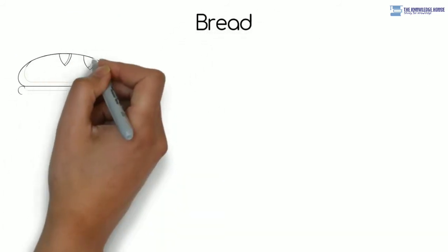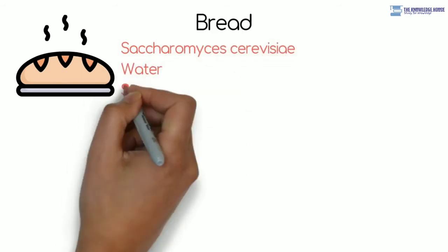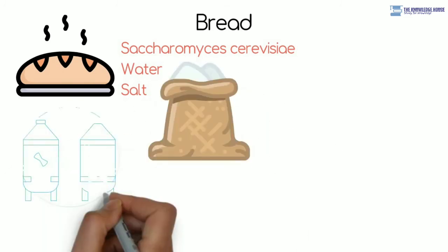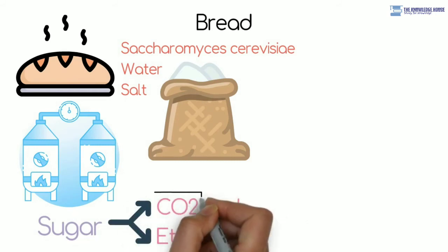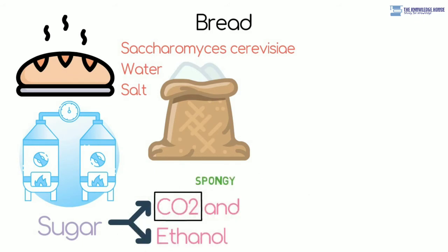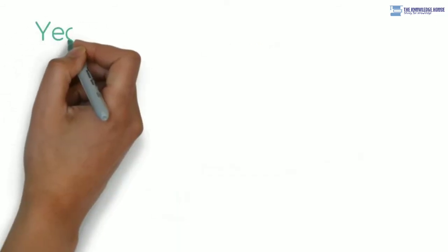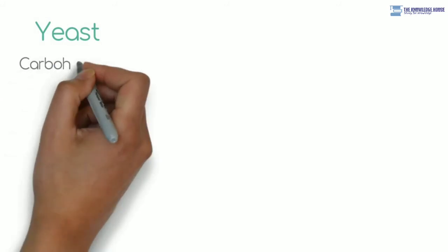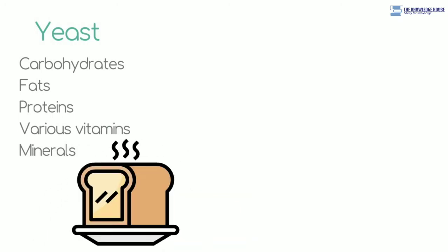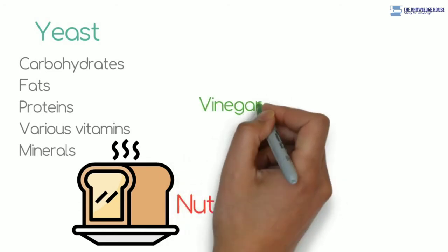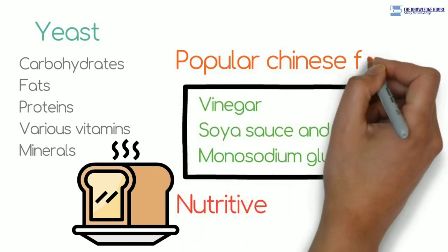Bread. Different types of breads are produced from flour of cereals. Dough is formed by mixing of baker's yeast, Saccharomyces cerevisiae, water, salt and other necessary materials with flour. Due to fermentation of carbohydrates by yeast, sugar is converted into carbon dioxide (CO2) and ethanol. Dough rises up due to CO2 and the bread becomes spongy. Compressed yeast is used in commercial bakery industry. It is available in dry, granular form for domestic use. Yeast produced for commercial use contains various useful contents like carbohydrates, fats, proteins, various vitamins and minerals. Due to this, bread and other products produced with the help of yeast become nutritive. Ingredients like vinegar, soy sauce and monosodium glutamate that are used in presently popular Chinese food are produced by microbial fermentation.